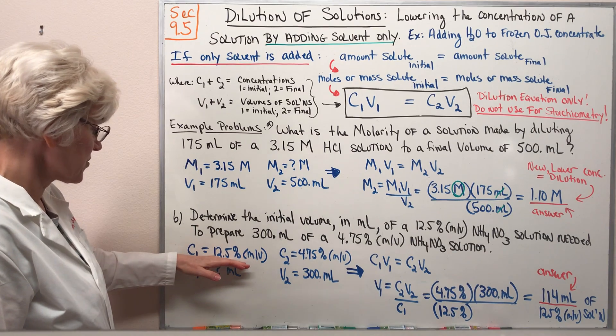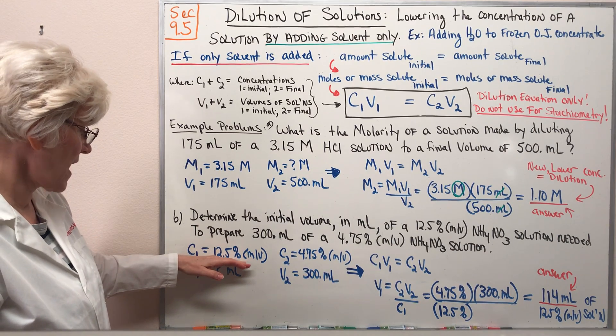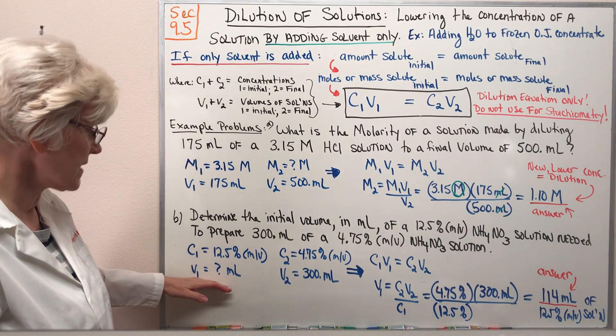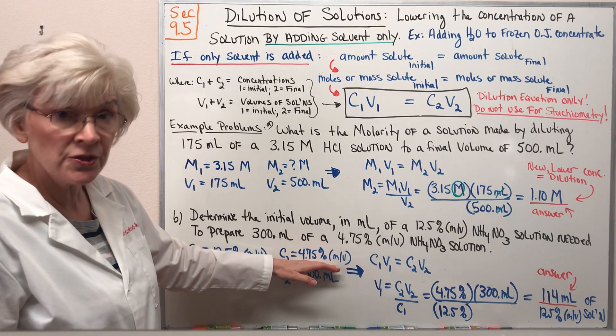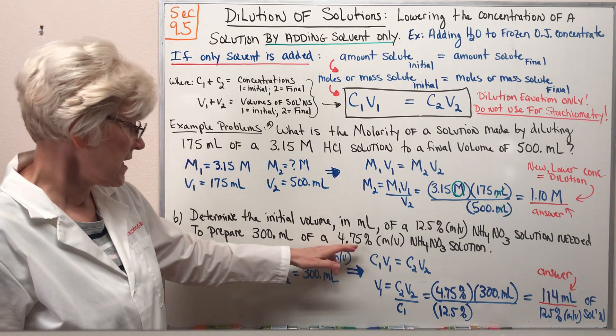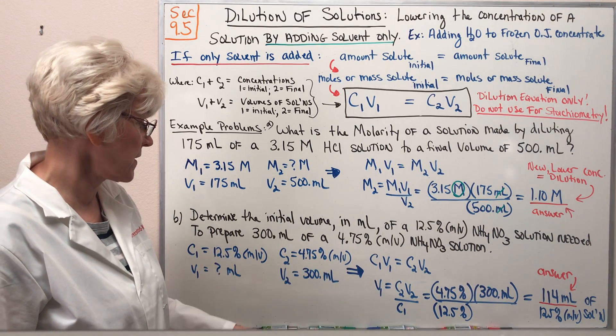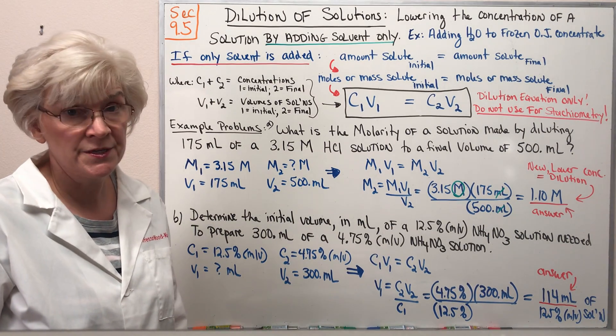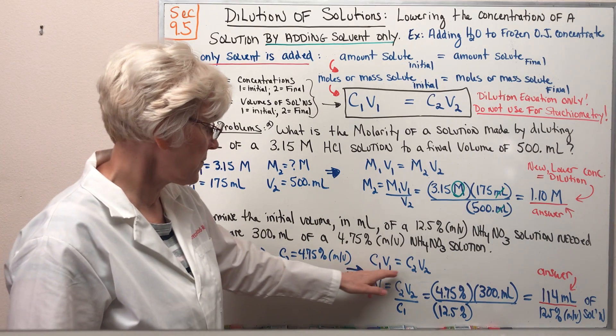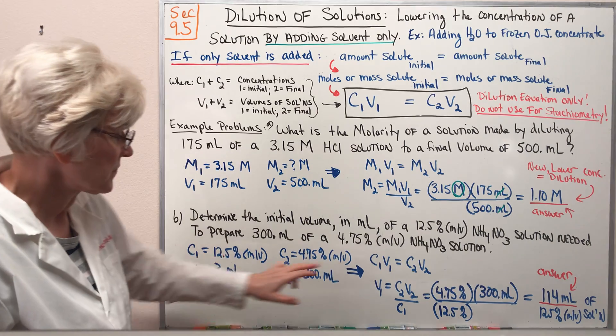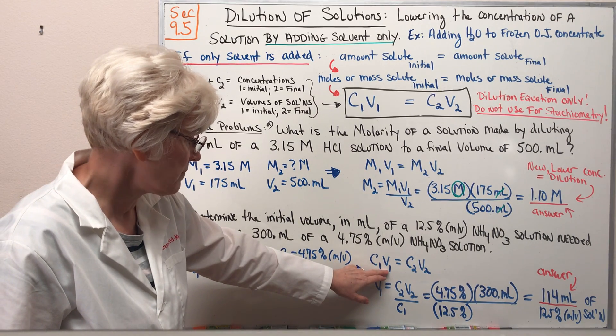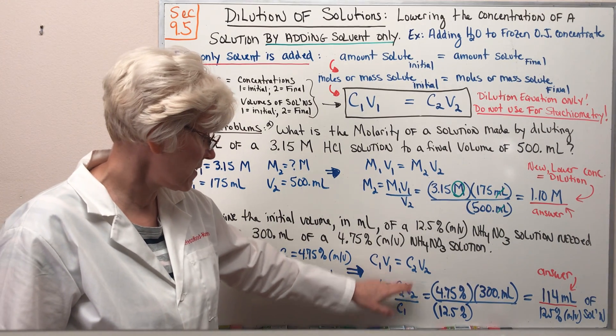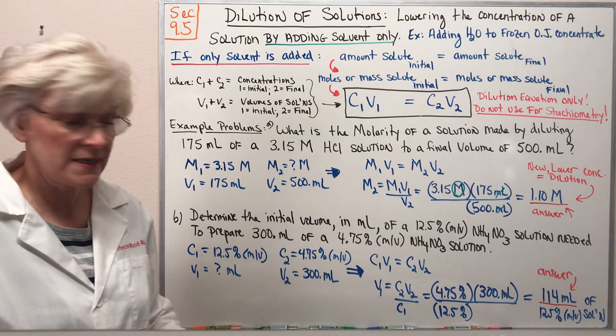So again, labeling our data: our initial concentration is 12.5% mass/volume. Our initial volume, we don't know, we're trying to find in milliliters. Our diluted lower concentration is 4.75% mass/volume and our total volume of diluted solution is 300 mL. So C1V1 equals C2V2. We've labeled our data. Solving for V1, we divide both sides of the equation by C1 and we get V1 equals C2V2 divided by C1.